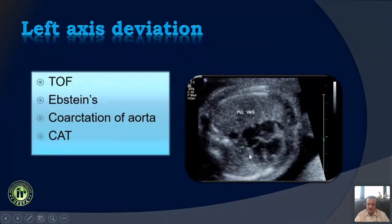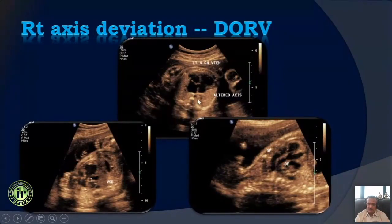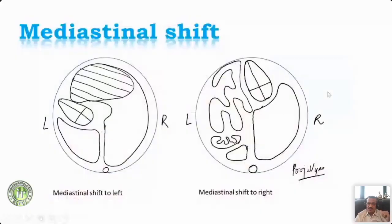Typically, when you have a left axis deviation, there are certain anomalies we think of, and when there is a right axis deviation with the line coming toward the center, we need to think of some anomalies. Mediastinal shift is a different entity compared to axis deviation.